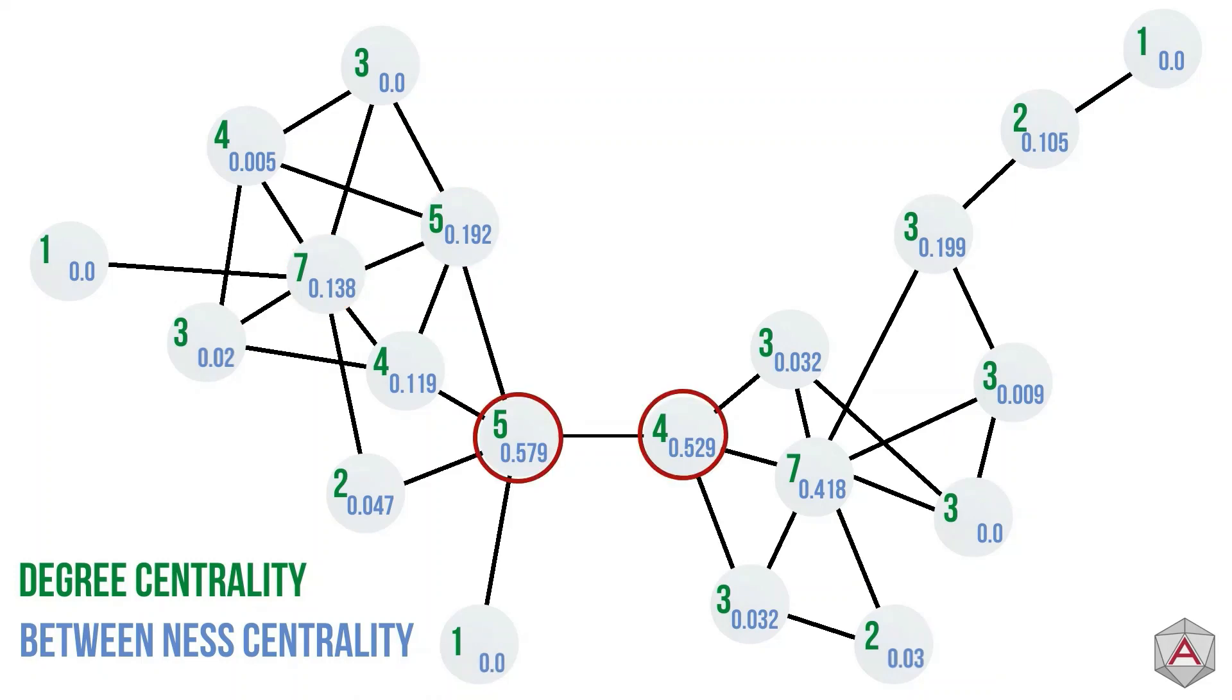However, these two nodes, which have a high degree score, but they also have high betweenness centrality, and they play the most important role in the network. If we were to remove either of them, the graph would be fragmented.